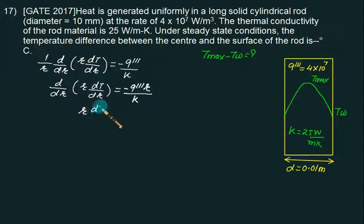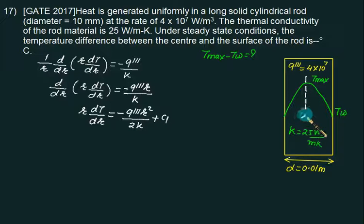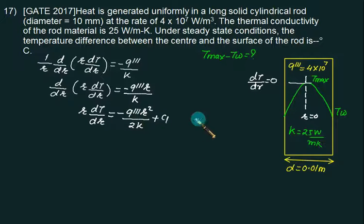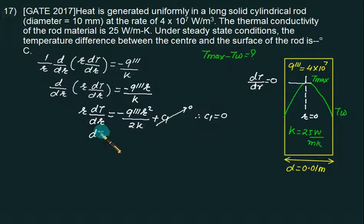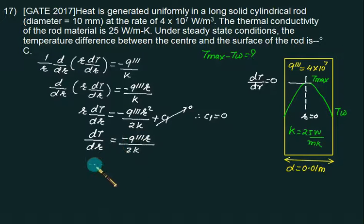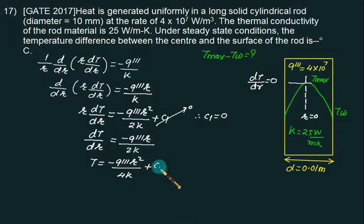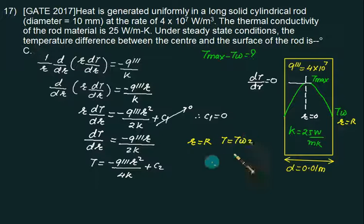Integrating once: r dT/dr = −Q‴ r²/(2K) + C₁. At r=0 the temperature is maximum, so dT/dr = 0, which gives C₁ = 0. Therefore dT/dr = −Q‴ r/(2K). Integrating again: T = −Q‴ r²/(4K) + C₂. Applying the boundary condition at r = R (surface), T = T_W, we get C₂ = T_W + Q‴ R²/(4K).